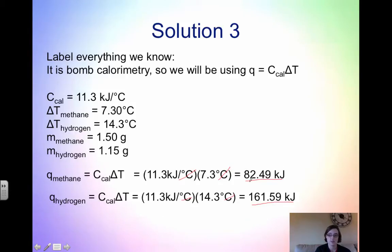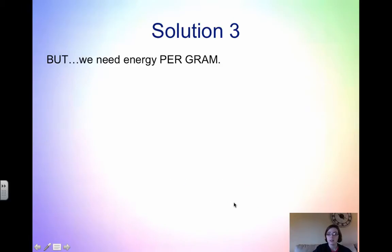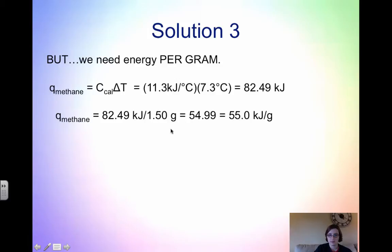So we have the heat produced by the methane and the heat produced by the hydrogen. But the problem said we need energy per gram. When we looked at the heat of methane, this was 82.49 kilojoules per 1.5 grams. We had 82.49 kilojoules for every 1.5 grams. If we divide this, that gets us 54.99 kilojoules per gram, or if we round to 3 sig figs, it's 55.0 kilojoules per gram.